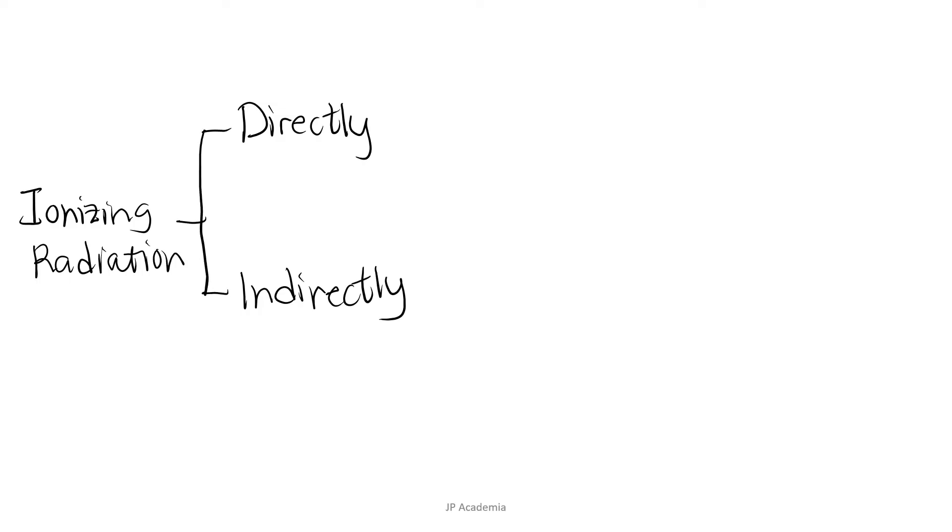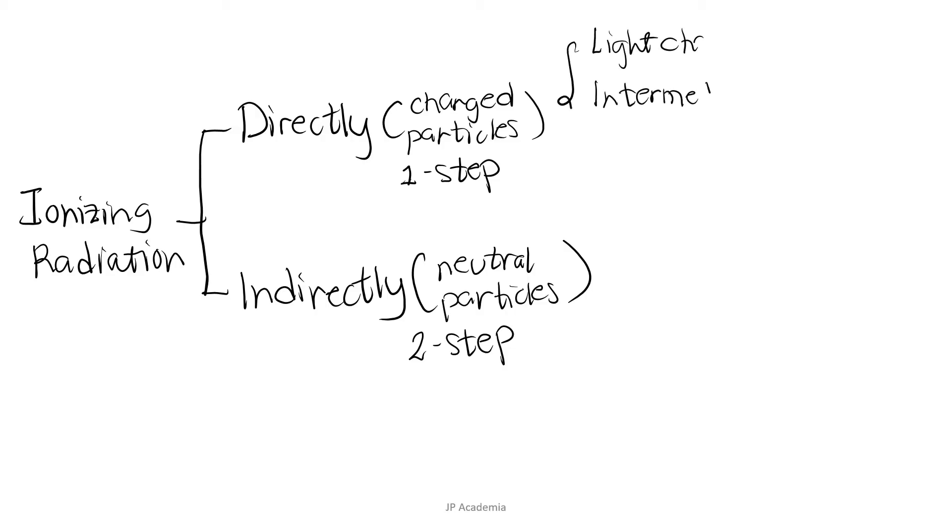First, directly ionizing radiation. This group includes charged particles that are capable of depositing energy in a direct one-step process, mainly through Coulombic interactions between the directly ionizing radiation and orbital electrons. The key word here is one-step process for directly ionizing radiation. Some examples of charged particles are light charged particles that include electron and positron, intermediate particles such as negative pions, and heavy particles that include protons, alpha particles, and carbon-12.